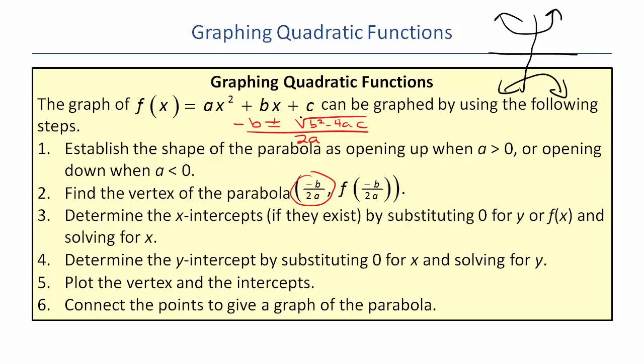So once you determine if it opens up or opens down, you then get its vertex by doing -b over 2a, plugging that back in and figuring out the y value. Now you've got the little dot that's the vertex. You use the quadratic formula or you factor it or do whatever you got to do to find the x-intercepts if they exist.